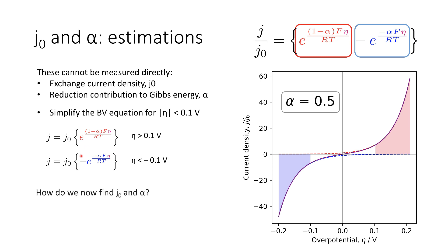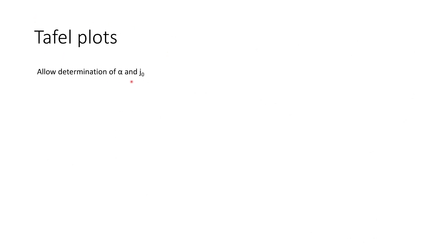Now that we've established this, how do we find our exchange current density and alpha? We have an equation here that is very similar in format to the Arrhenius equation. If we think about linearizing this form of equation, we get onto plotting data on a graph. The name for these plots is called Tafel plots. They allow the determination of our fractional symmetry component and our exchange current density. To do one of these plots, we simply plot the log of the current density against the overpotential.